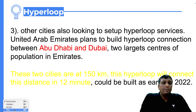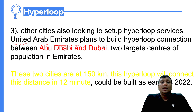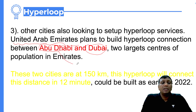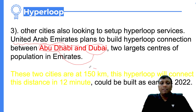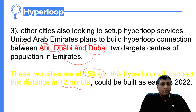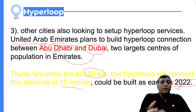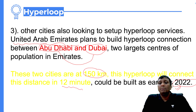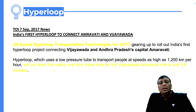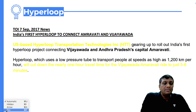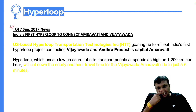A third announcement about hyperloop involves the UAE — United Arab Emirates — which plans to build a hyperloop connection between Abu Dhabi and Dubai. The distance is around 150 kilometers, and the journey will complete in just 12 minutes. As per news, the hyperloop between Abu Dhabi and Dubai was targeted to start running by 2022, as mentioned in a Times of India article from September 7, 2017.